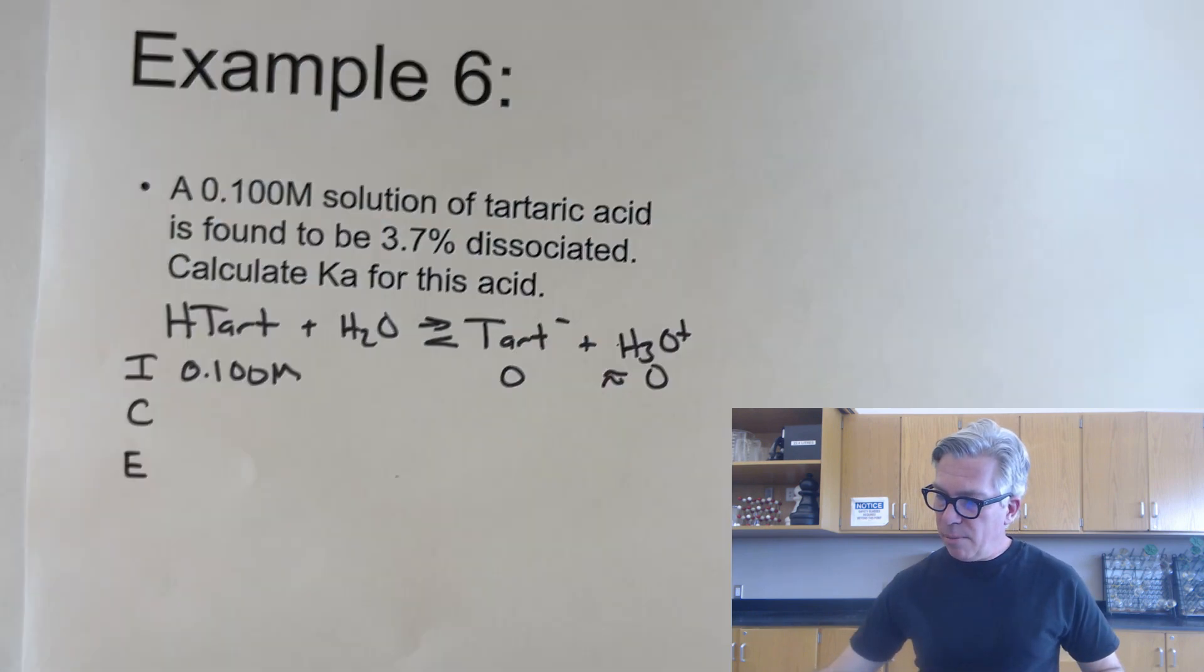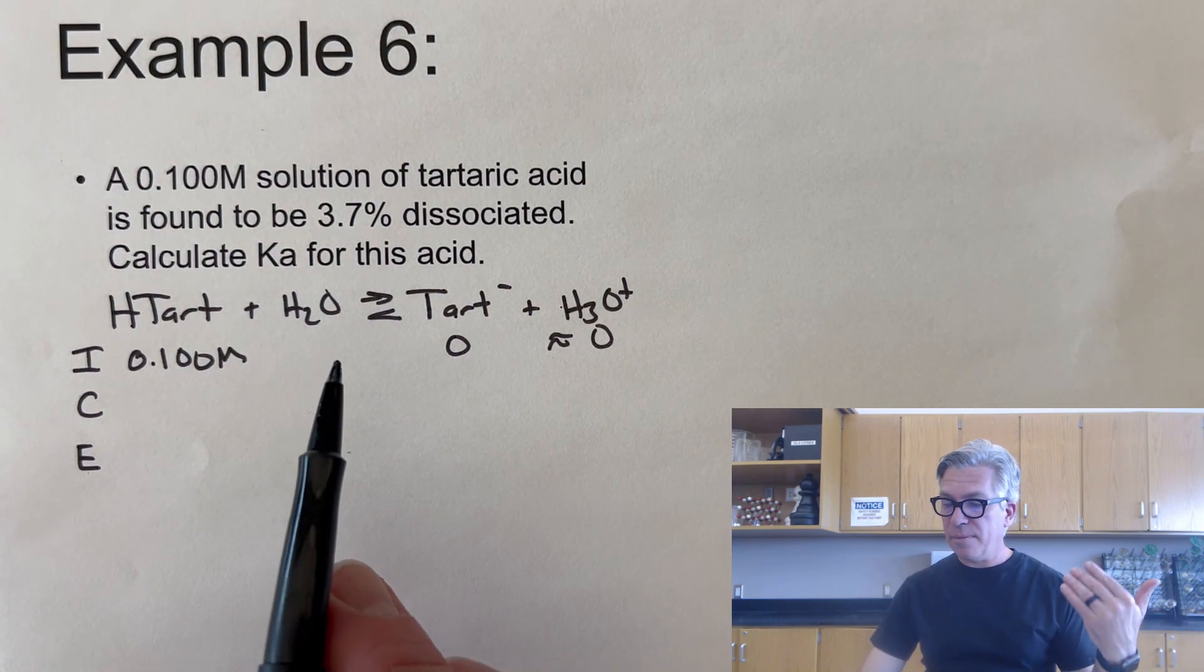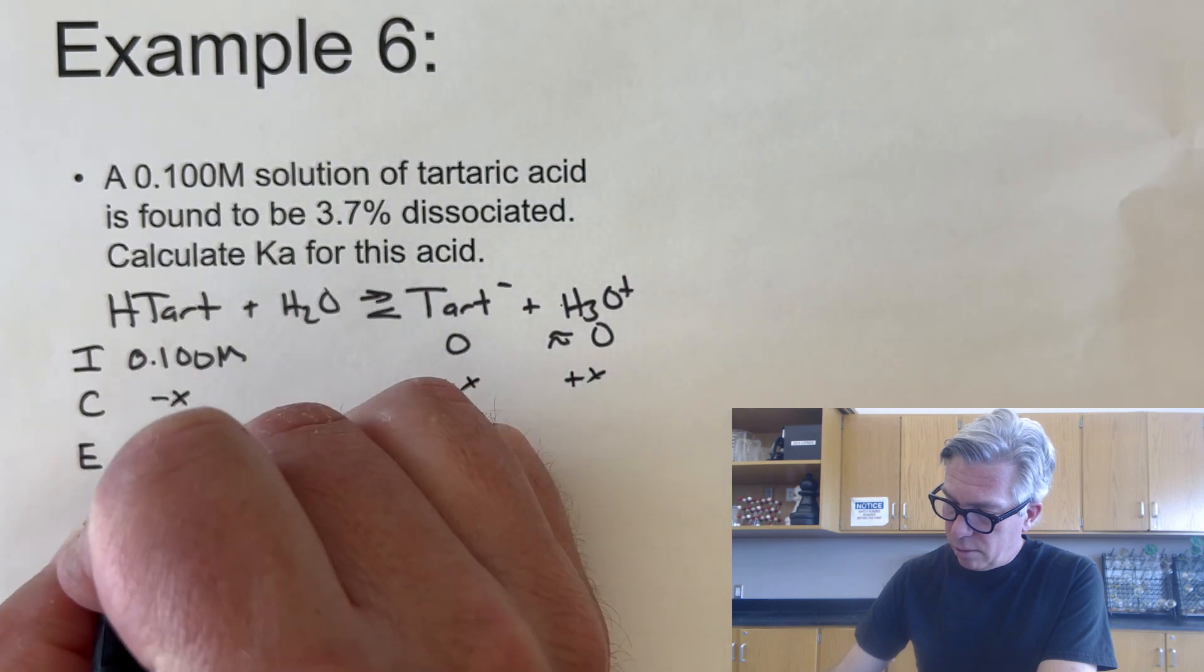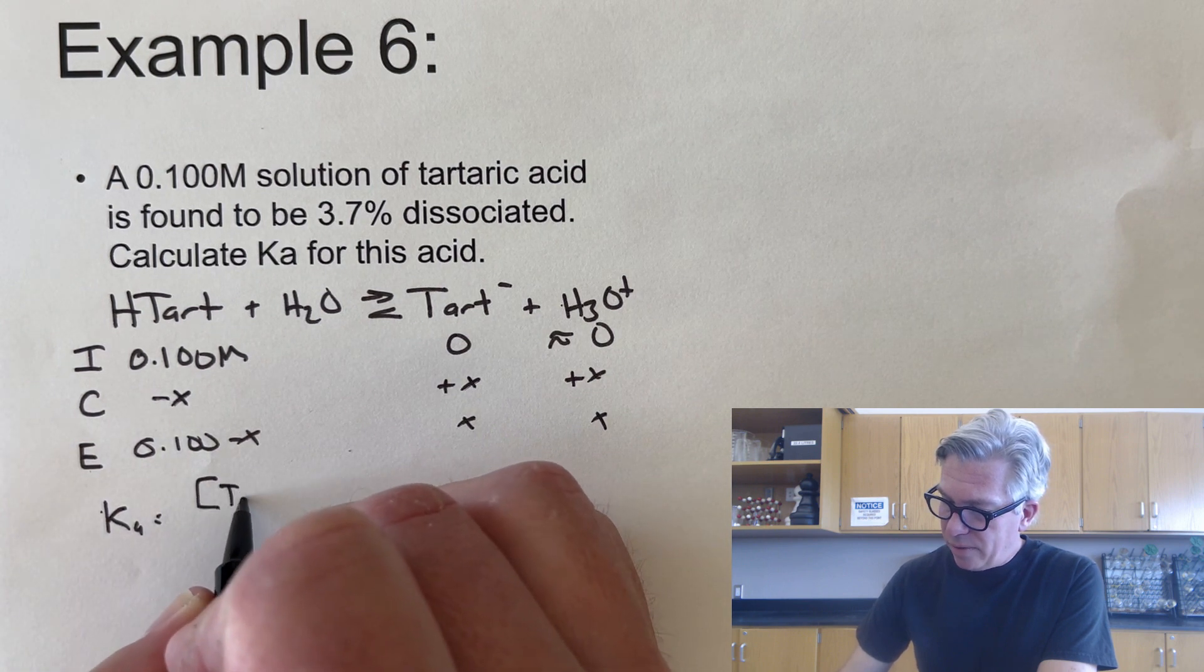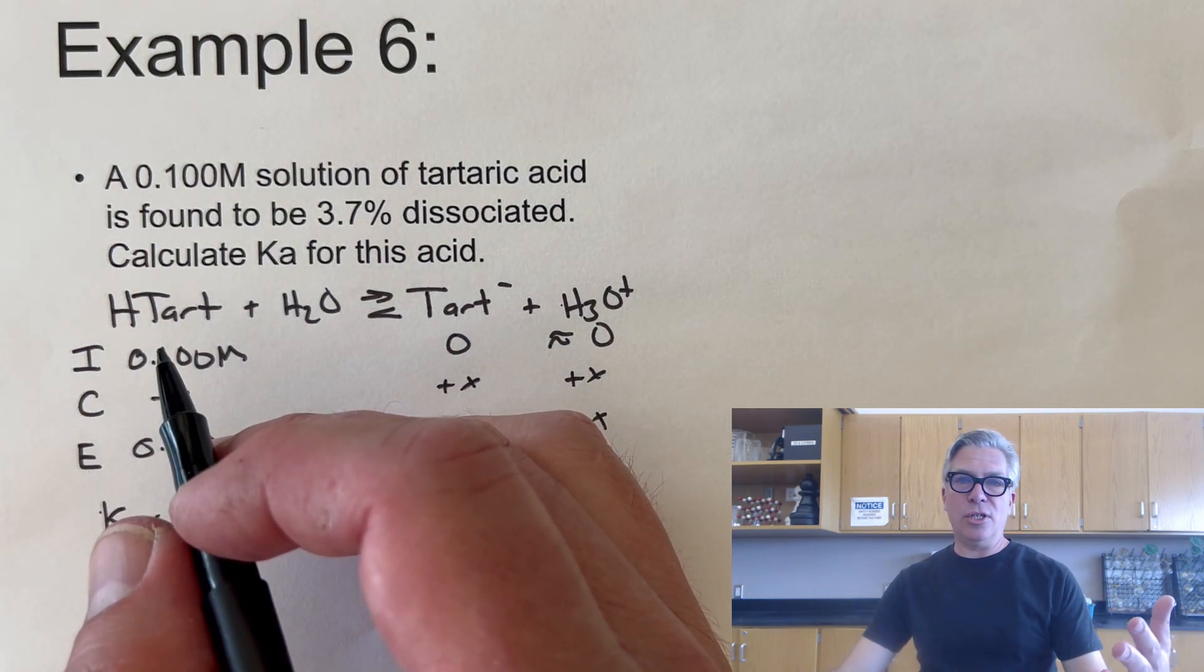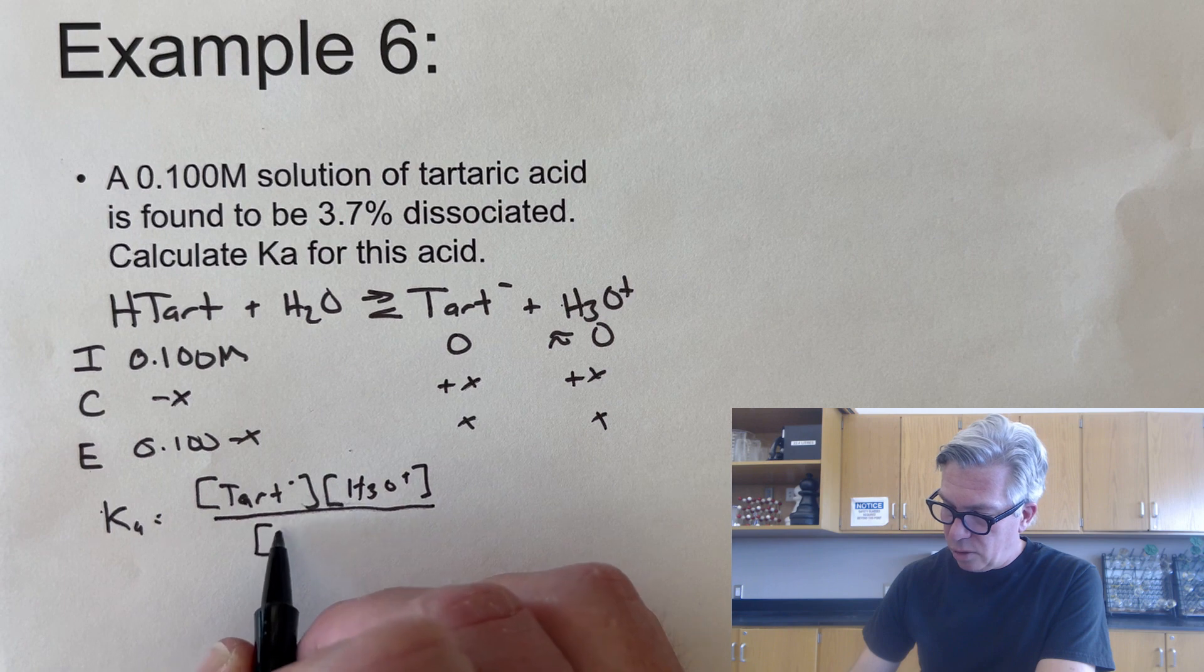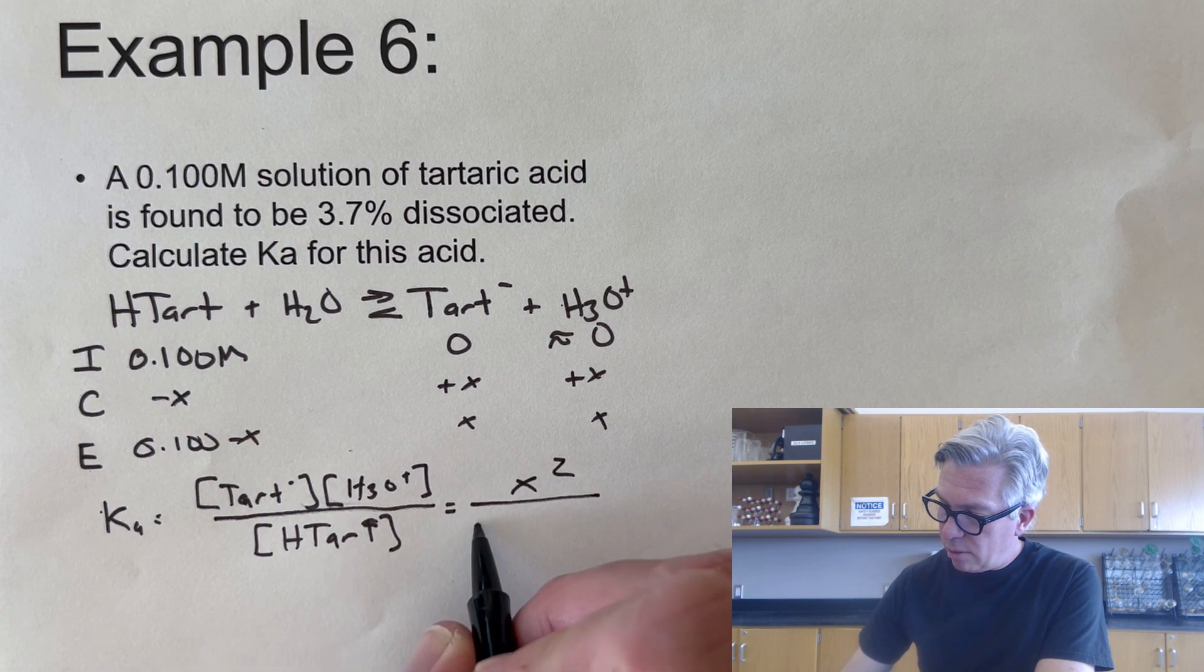We got one more type of problem to go. A 0.1 molar solution of tartaric acid is found to be 3.7% dissociated. That's another name for ionized. Calculate the Ka for this acid. So this is the reverse again. And I took a moment to start setting up my ice table 0.100 minus X and we'll do X and X. So the Ka value is going to be, and again I abbreviated, I actually like to do this because sometimes these polyatomic ions, these anions are like C6H something with a bunch of carbons, a bunch of hydrogens, a bunch of oxygen. And just to keep things simpler I'm just going to call it the tart- ion or the tartrate ion. And that's going to be over H-tart, which is just fun to say. And that's going to be equal to our X squared over 0.100 minus X.